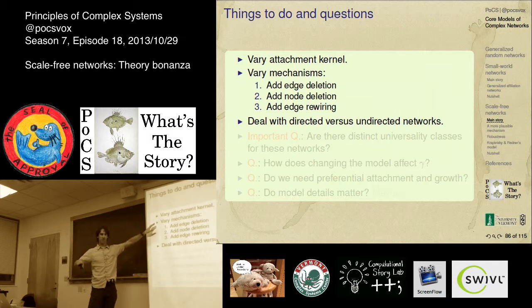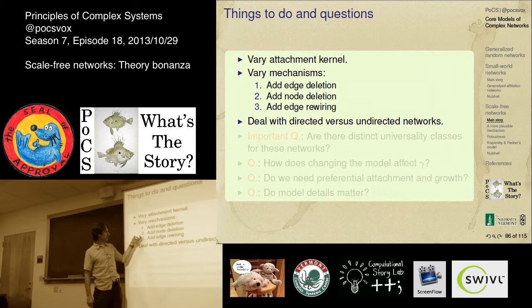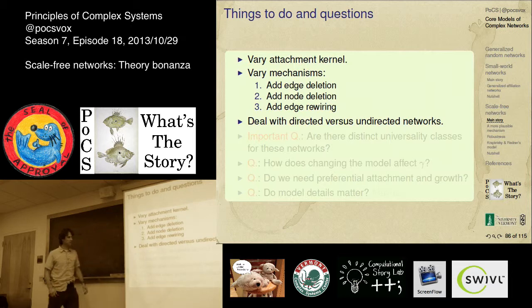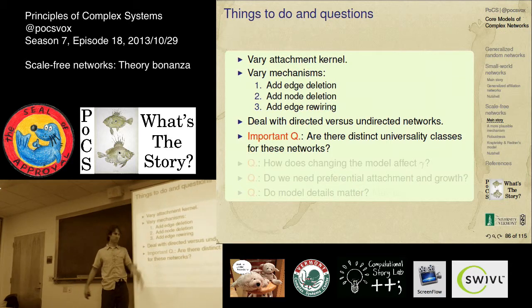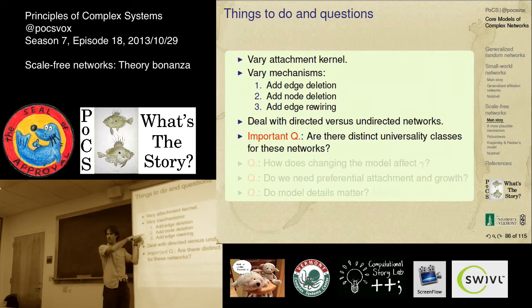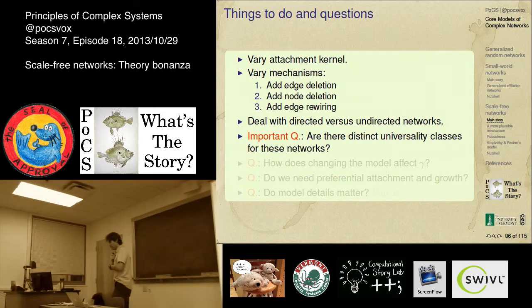Here's a problem to work on. Let's take this model and start changing things around. Some very natural additions in the context of networks: edge deletion, node deletion — things can live and die — rewiring of edges, directed networks. And then there's a really fundamental question: is there a universal thing? If you start messing around with these mechanisms, does that exponent of three remain robust?